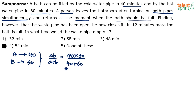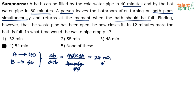40 into 60 over 100 — the denominator is 100, so zeros get cancelled and we are left with 4×6 = 24. So when both the cold water pipe and hot water pipe are open simultaneously, it takes 24 minutes to fill the bath.